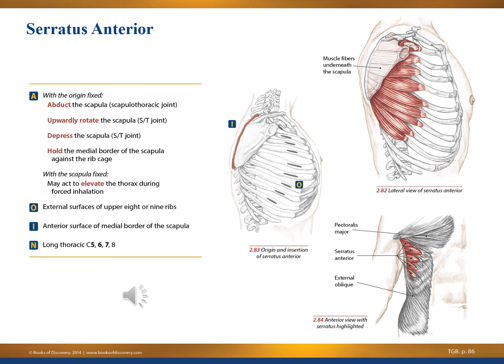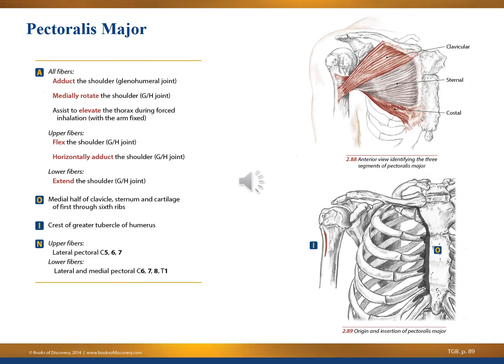Pictured here is the serratus anterior. It's along the rib cage, with muscle fibers underneath the scapula — you can see the action, origin, insertion, and innervation here. This is a whirlwind tour through major muscles. The pectoralis major — in image 2.88 — shows how it attaches to the clavicle, the sternum, and also to the costal area, meaning the ribs.